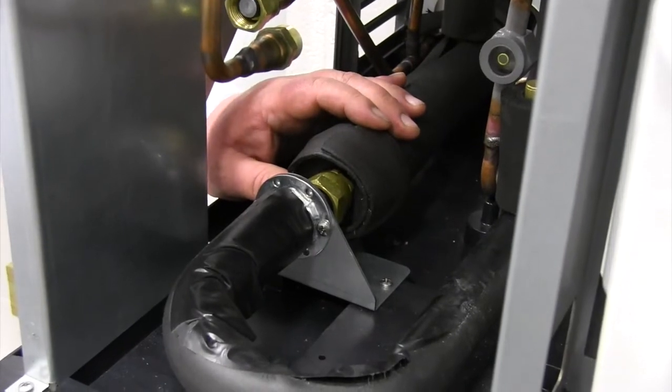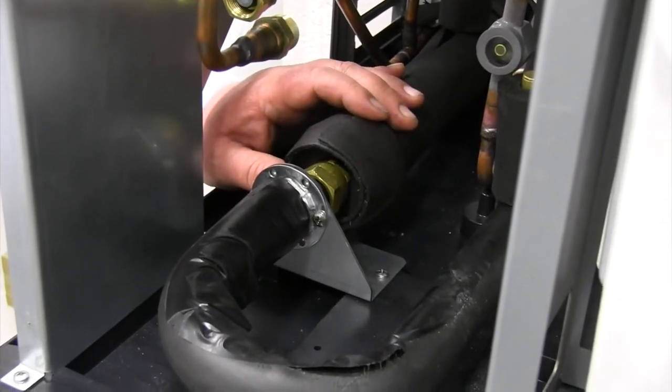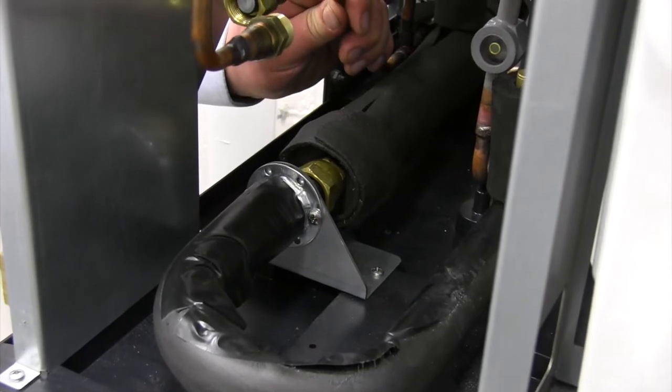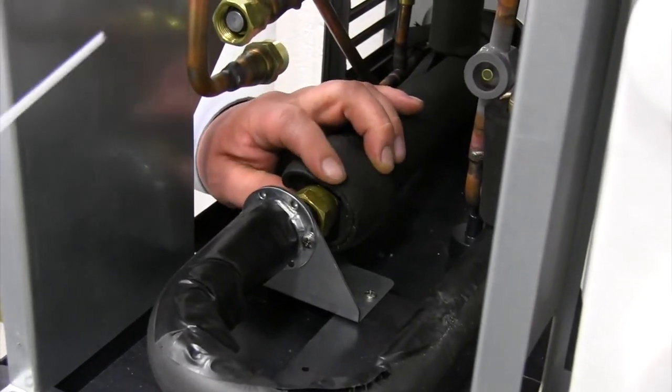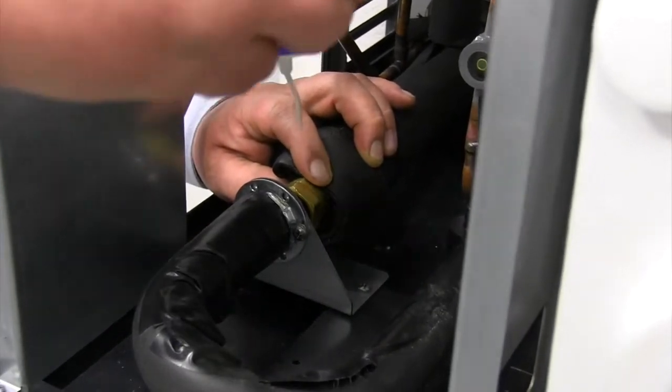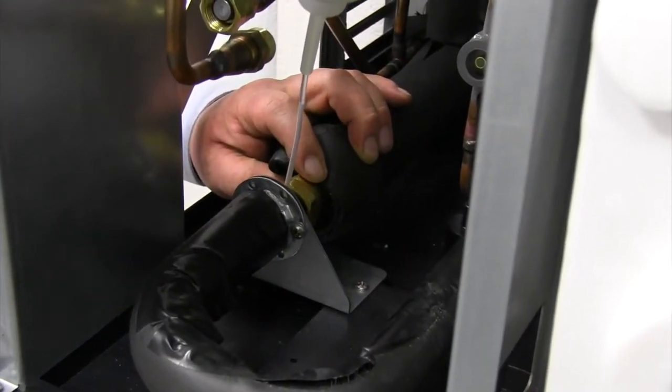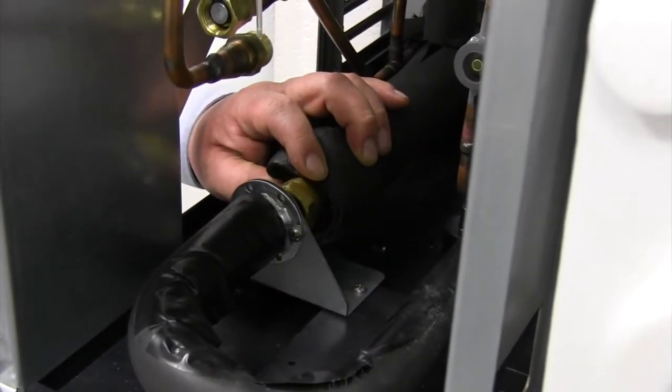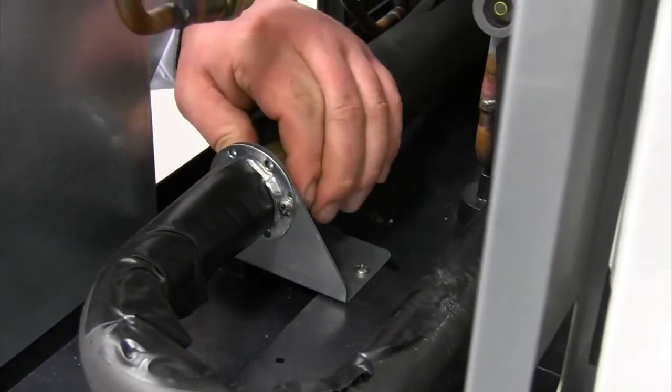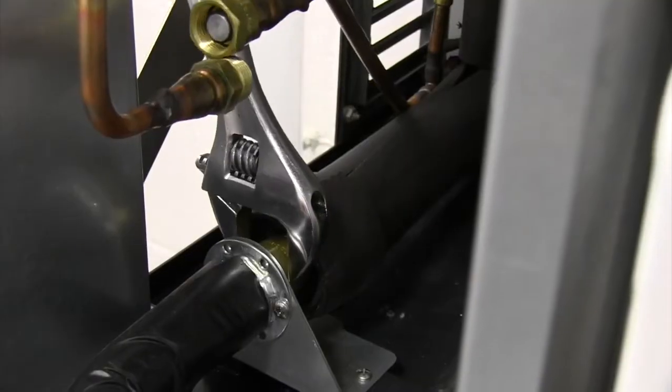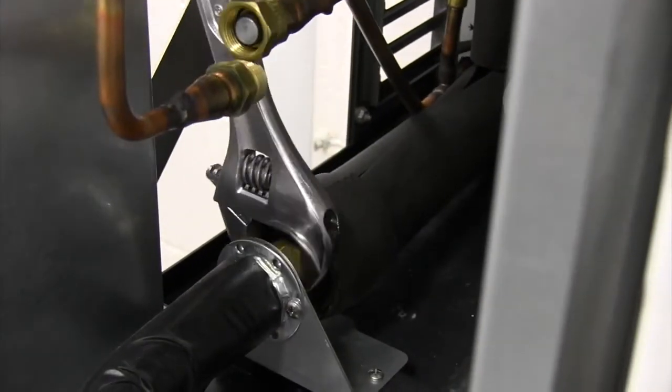Now that we have our ice machine pushed all the way into our louvered docking station and we have positive refrigeration pressure on our line set, we can go ahead and connect our quick connects. We're going to add a little dab of oil to the threads on both of these. We're tightening down to about 30 foot-pounds.